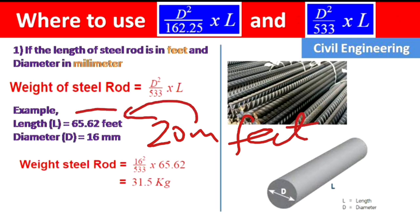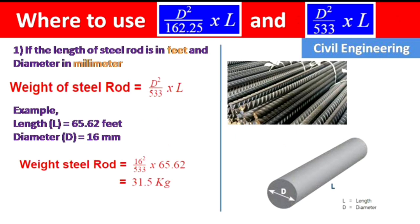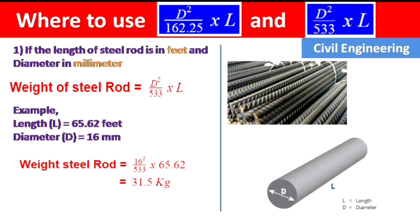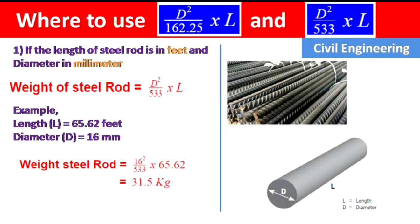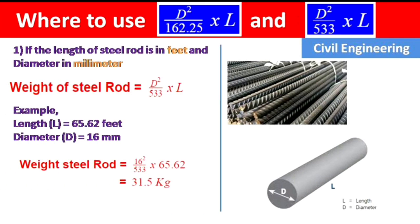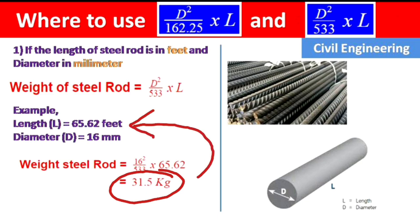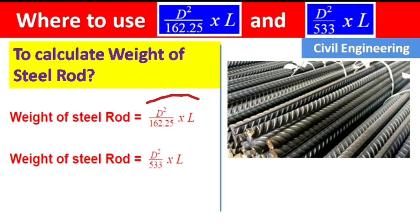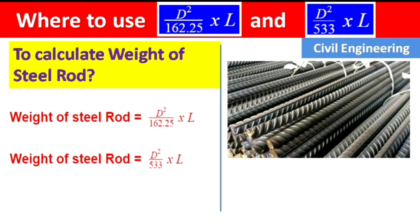Here, 20 meters has been converted to 65.62 feet so we can confirm both formulas give equal results. Calculating this value we get 31.5 kg — the same answer as before. This confirms that both d² / 162.25 × L and d² / 533 × L are correct.